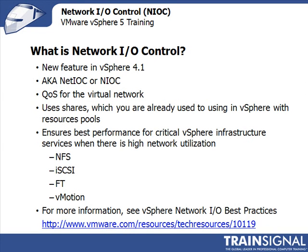You really have to understand your infrastructure, your applications, and the type of network traffic being created. Perhaps you want to split out this network traffic if it's causing too many problems. But for the most part, the quality of service provided in NIOC is going to be exactly what virtual networks need to ensure your most critical traffic gets the priority it deserves. There's more information available on vSphere Network IO best practices at the URL shown. So let's move on and talk about what's new in vSphere 5 Network IO Control.